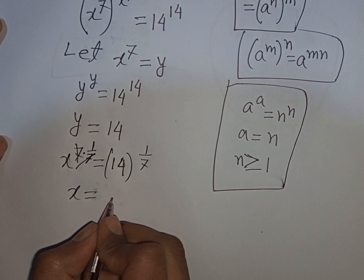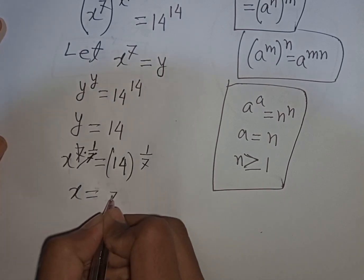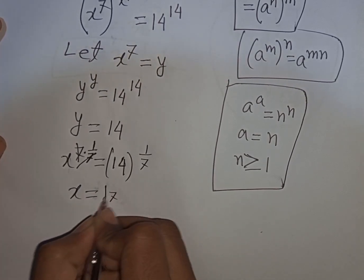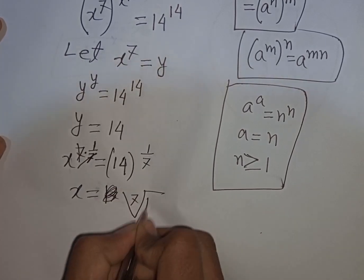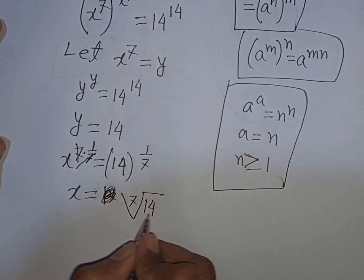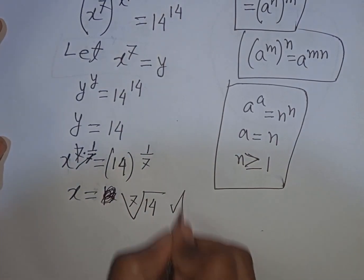14^(1/7) can be written as the 7th root of 14. So the 7th root of 14 is the value of x. This is our final answer.